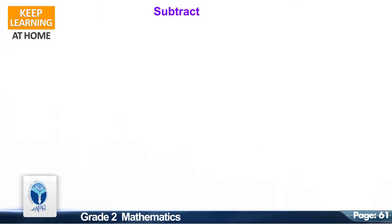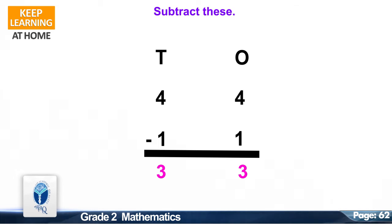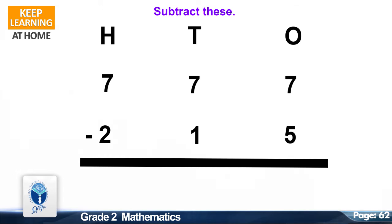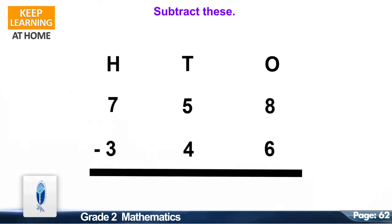Now we move to the next resource pack concept: Subtract these. Let's start. 44 minus 11. The correct answer is 33. Question number 2: 777 minus 215. The correct answer is 562.